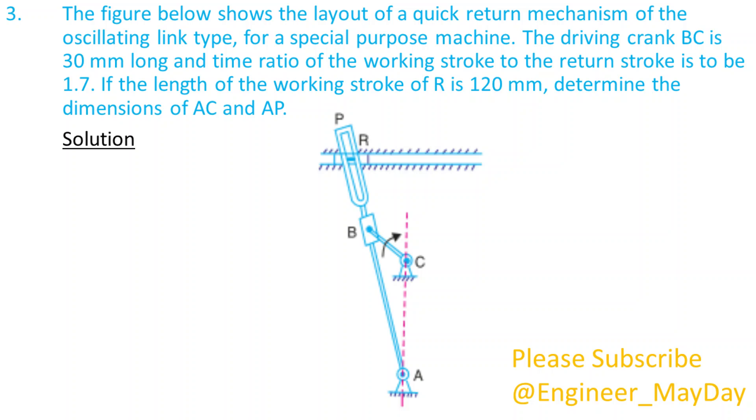Solution. Given: BC equals 30 millimeters, R1 R2 equals 120 millimeters, R equals 1.7.